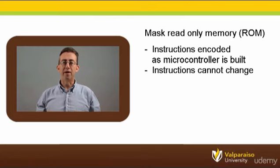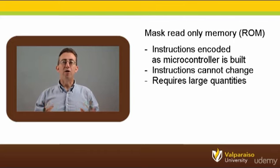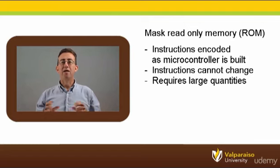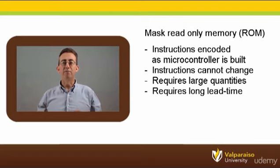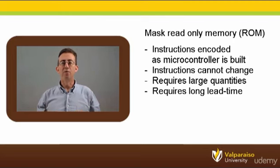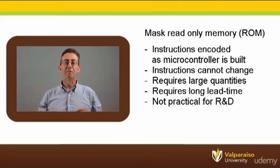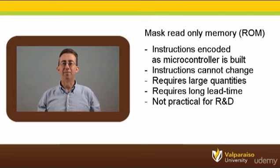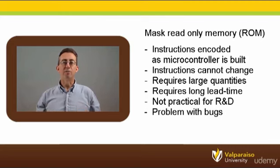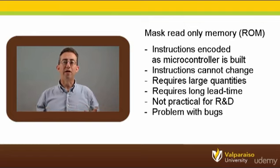This leads to a number of serious disadvantages. It is only economical to build mask ROM in large quantities, since users must contract the semiconductor manufacturer to produce a custom design. Next, the turnaround time between completing a program and receiving the fabricated mask ROM microcontroller can be several weeks or months. Also, mask ROM is impractical for research and development work, since designers need to modify the contents of memory often as they redefine a design. Finally, if a product is shipped with a faulty mask ROM — for example, a hidden software bug — the only way to fix it is to recall the entire product and physically replace every microcontroller in every unit that was shipped.